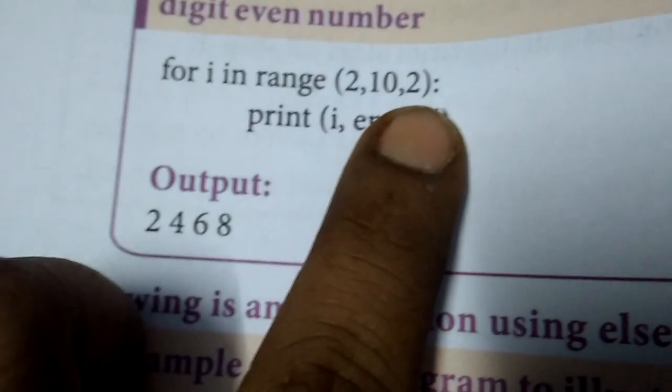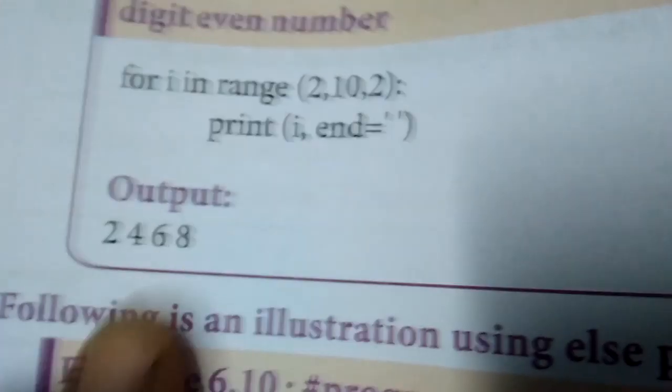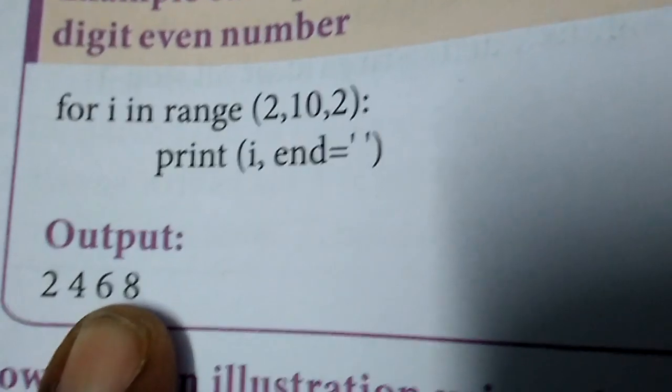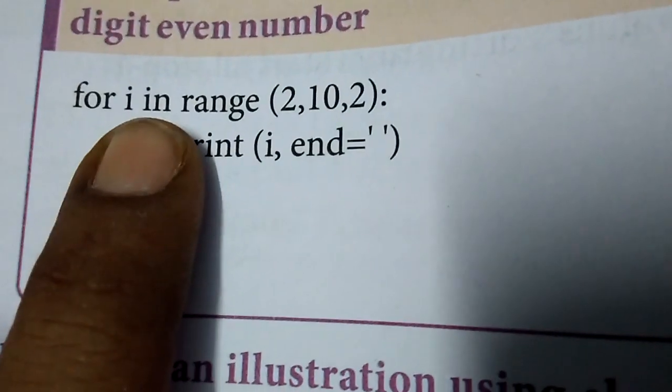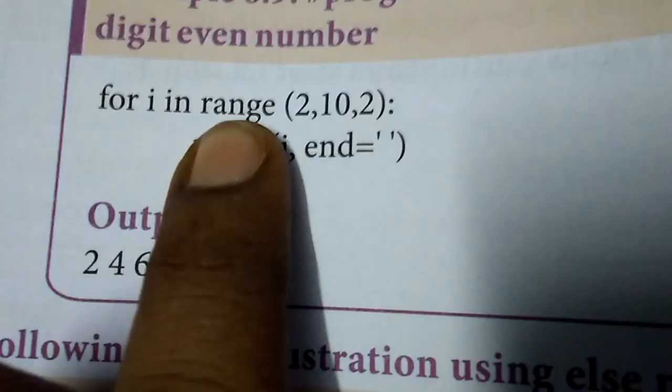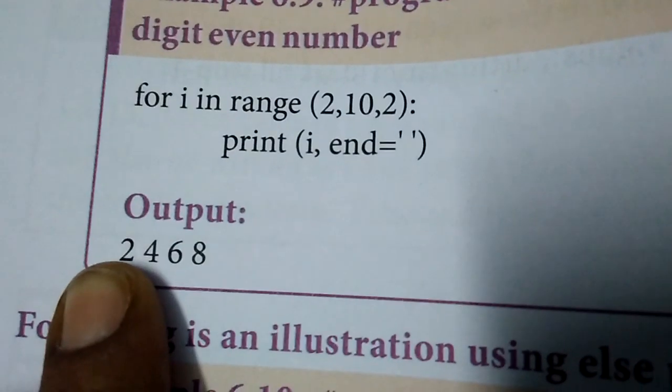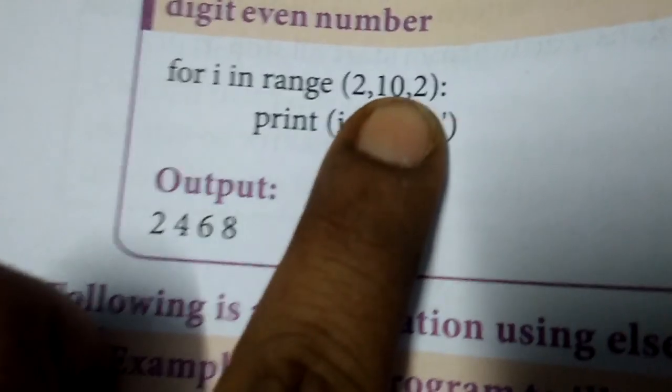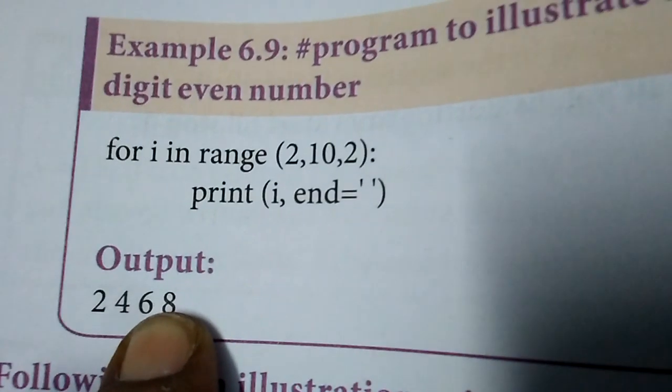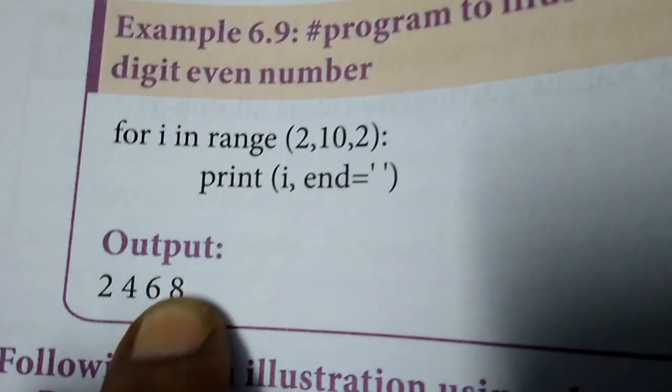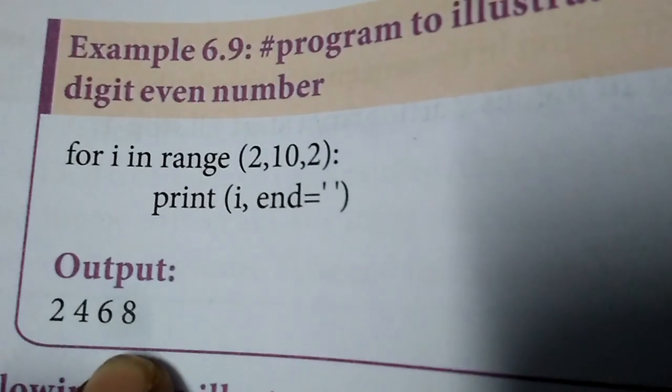For example, two times two is four, two fours are six, and it moves in steps. For values less than 10, it would be 8. In the program concept, i is the counter variable, and we have a range. The first one is the starting value, I am going to start my execution at 2, it ends at 10.